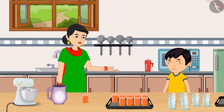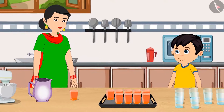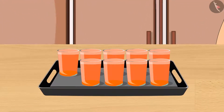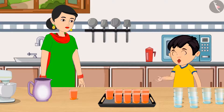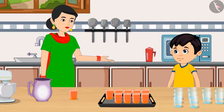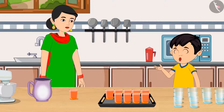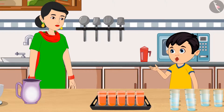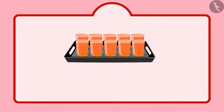Okay, mommy. Chotu, only 10 sherbet can be kept in one plate. Can you count and tell me how many glasses of sherbet are there in the plate? Children, can you tell me? Mommy, there are nine sherbet in the plate right now. Am I right? Yes, Chotu, you are absolutely right. So this means right now we have nine units.